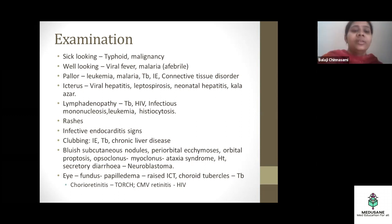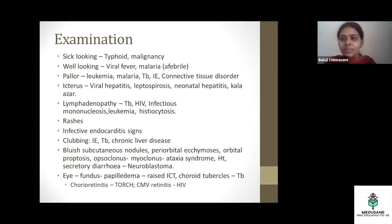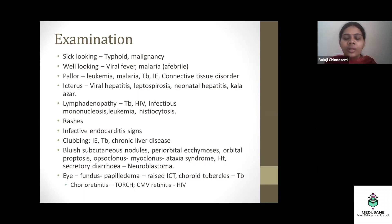If the child has bluish subcutaneous nodules, periorbital ecchymosis with orbital proptosis, opsoclonus-myoclonus or ataxic syndrome, hypertension, and secretory diarrhea — think neuroblastoma, especially in infancy. Eye examination and fundus for papilledema should be done to rule out tuberculosis meningitis, and in TORCH infections, look for chorioretinitis.